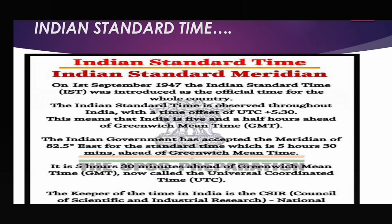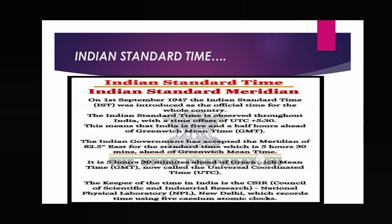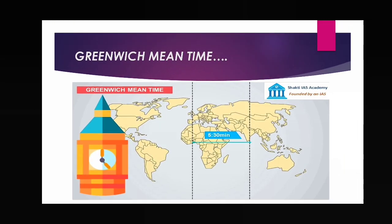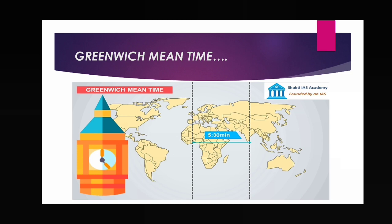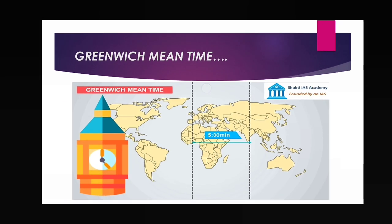Now for the third type of time: Greenwich Mean Time. GMT is calculated on the basis of the Greenwich meridian — that is the prime meridian, zero degrees. This meridian passes through Greenwich, a place near London, England. That is why it is called the Greenwich meridian.